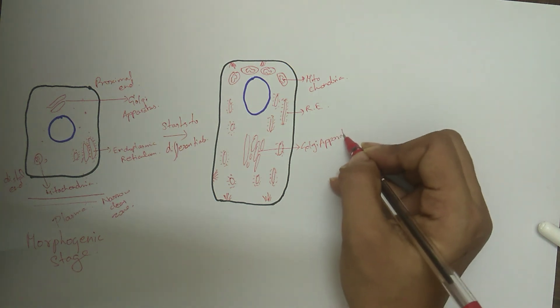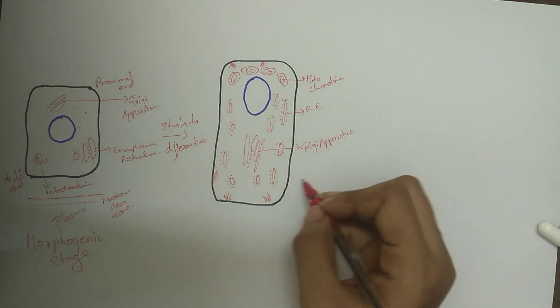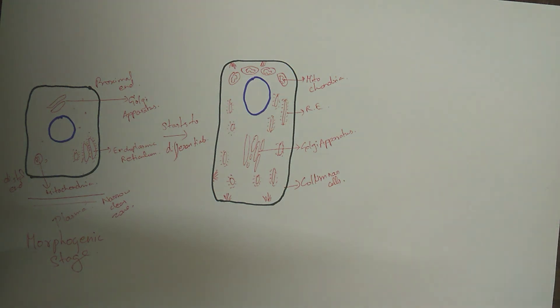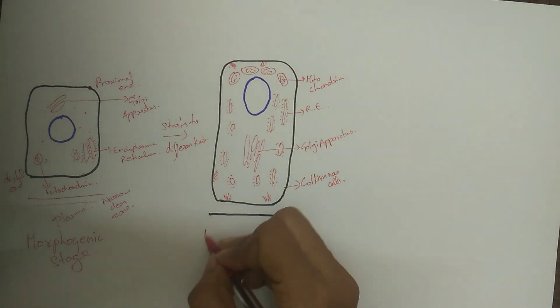During the later part of the organizing stage, formation of the dentin by the newly differentiated odontoblast begins. And this is the critical phase in the life cycle of the inner enamel epithelium. The inner enamel epithelial cells which were receiving their nutrition from the blood vessels of the dental papilla so far are deprived of it.